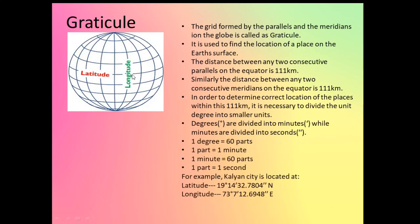One degree is 60 parts. From that 60, one part equals one minute. Again dividing one minute, it is again equal to 60 parts, and from that, one part divides into one second each. For example, if you want to know the location where Kalyan City is located — the latitude of Kalyan City is 19 degrees, 14 minutes, 32.7804 seconds north. The longitude of Kalyan City is 73 degrees, 7 minutes, 12.6948 seconds east. So that means Kalyan is located in the north-eastern hemisphere.